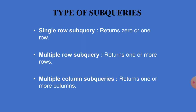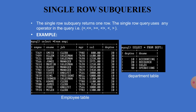Types of subqueries: A single row subquery returns 0 or 1 row. A multiple row subquery returns 1 or more rows. A multiple column subquery returns 1 or more columns. These are the three types. A single row subquery returns only one row and uses single-row operators like less than, greater than, less than or equal to, or greater than or equal to.